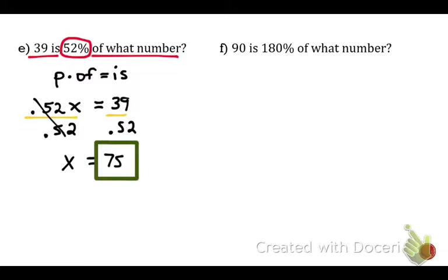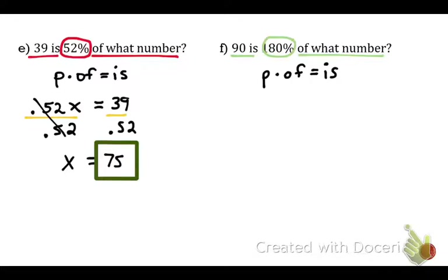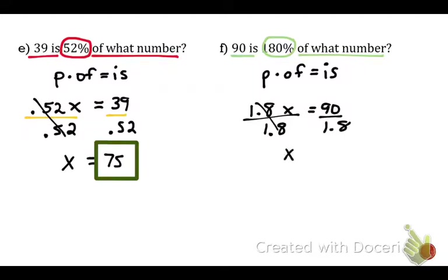Should we change 75 to a percent? No — the problem asks 'of what number,' so keep it as a number. Independent practice: 90 is 180% of what number? Change 180% to 1.8. Equation: 1.8 times x equals 90. Divide by 1.8 on both sides. x equals 50. It asks for a number, not a percent, so keep it as 50.